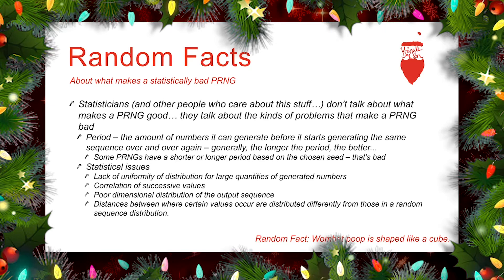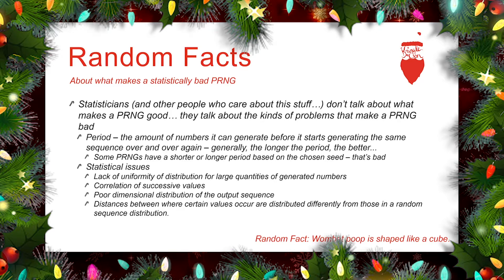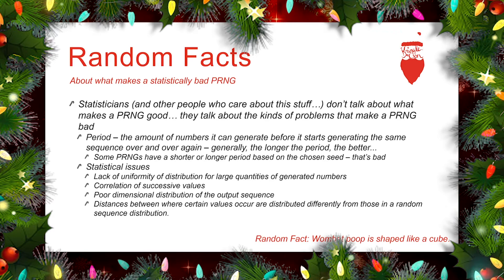Some pseudo-random number generation algorithms have a period that's dependent on the seed, and that can be really, really bad. Because if you pick the wrong seed value — either accidentally, or if you happen to choose one because that's the number of milliseconds since the machine started — you can end up with some really bad random numbers being generated. Bad from the perspective of being statistically bad.